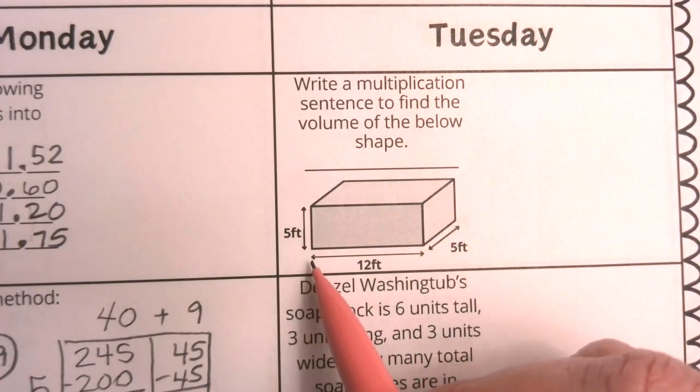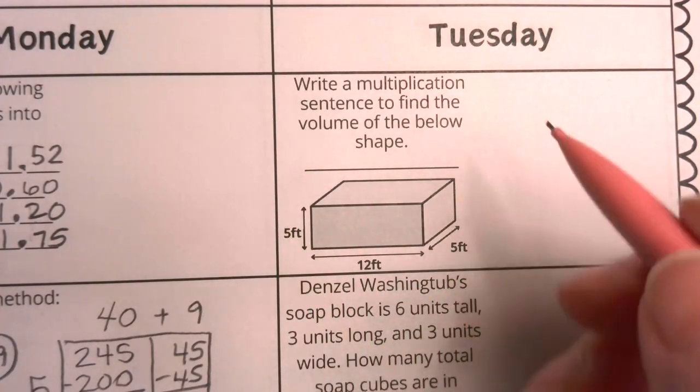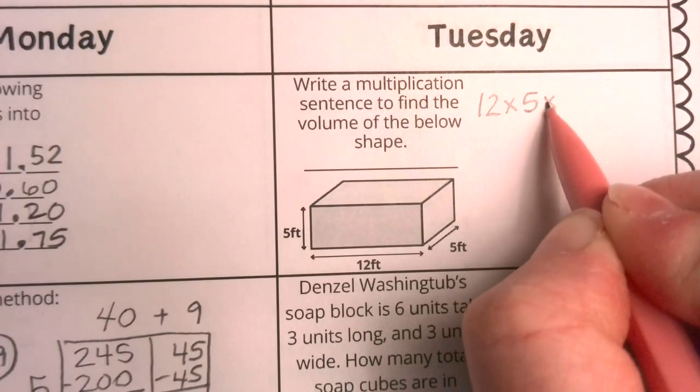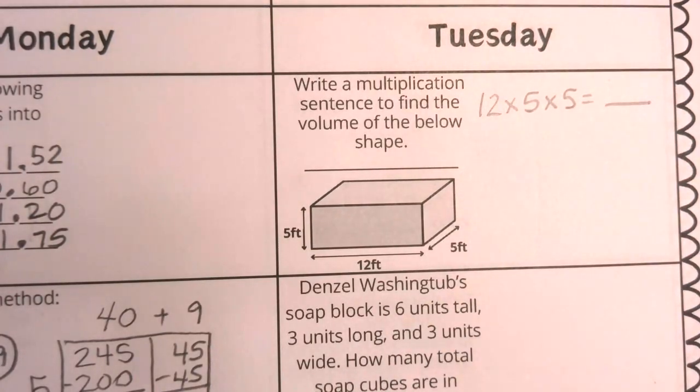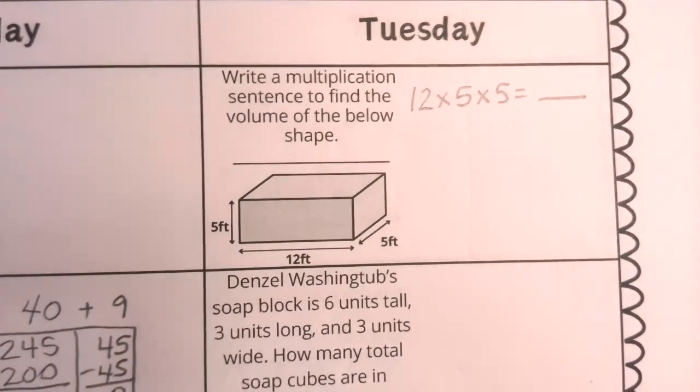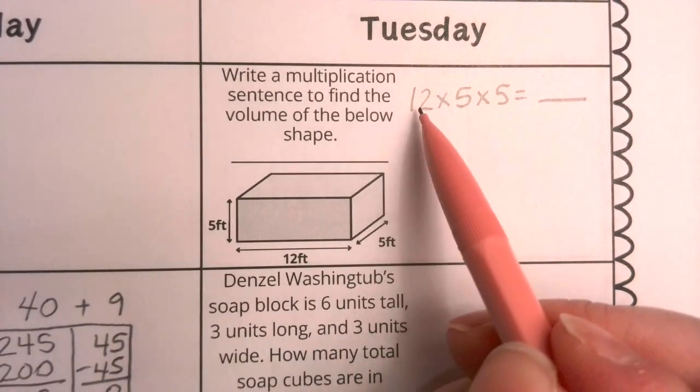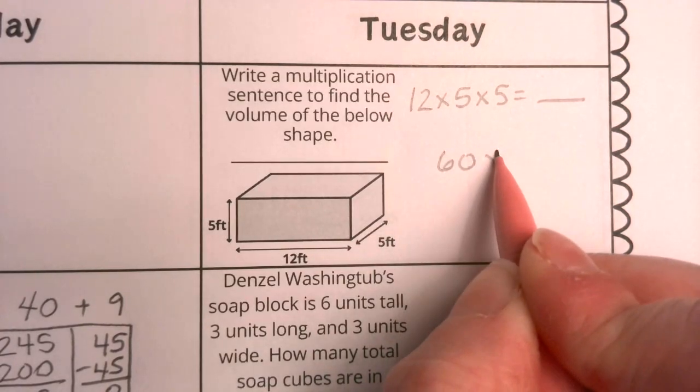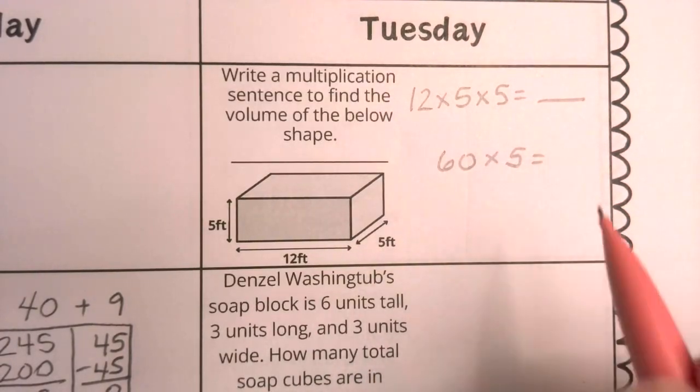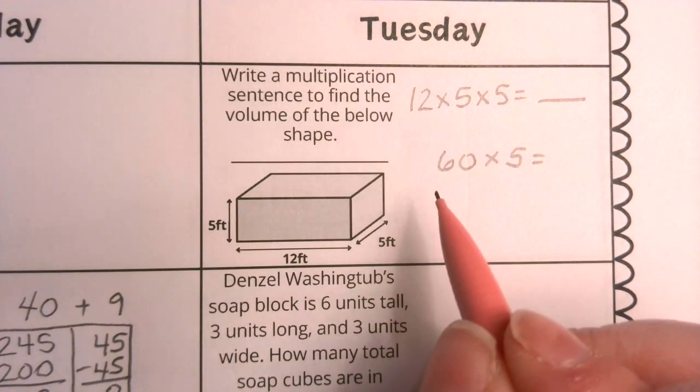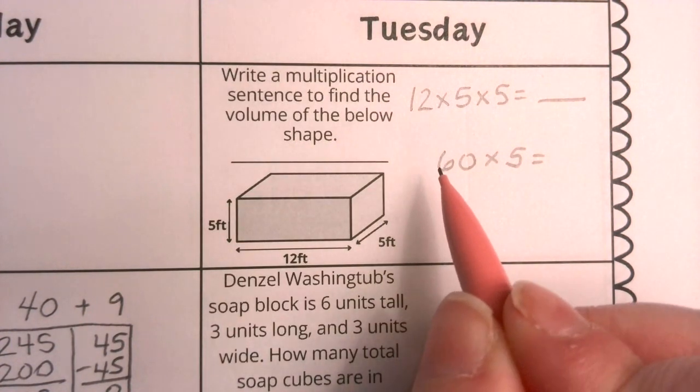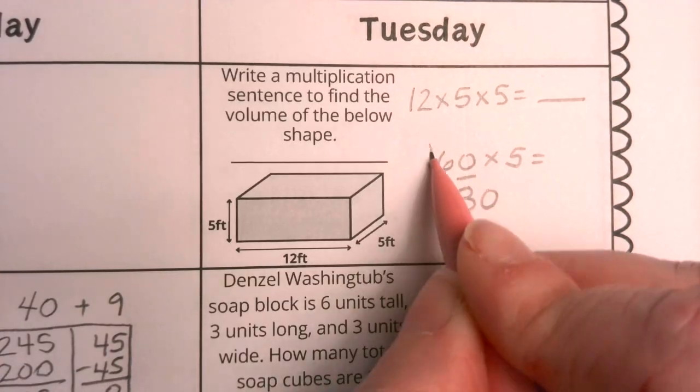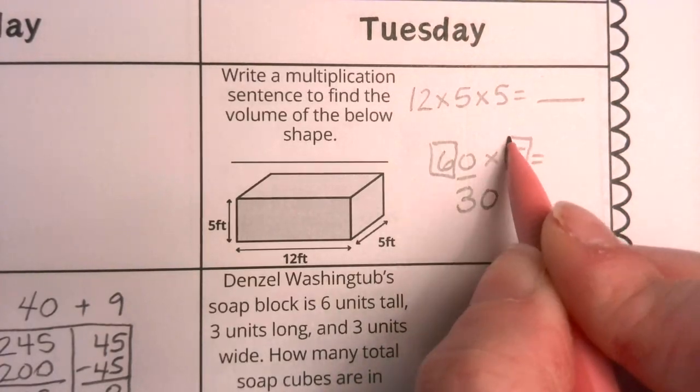So we are going to use our length times height, so we know that we have 12 times 5 times 5, but we do need to find out what that equals to make a true multiplication sentence. I know that 12 times 5 is 60. So really, I need to now multiply 60 by 5, but I can use my basic facts zero trick for that. 6 times 5 is 30. Here's that 6 times 5 equals 30.